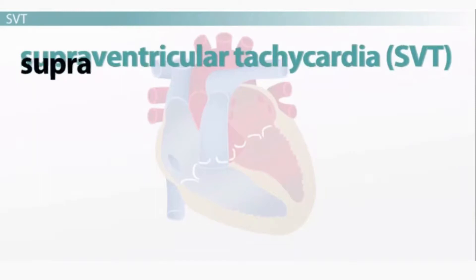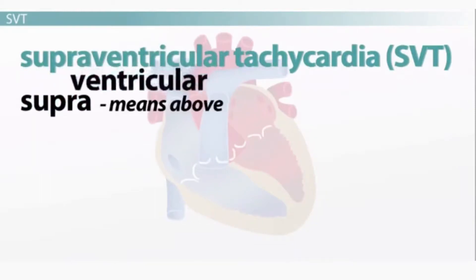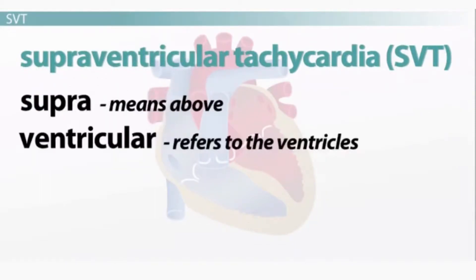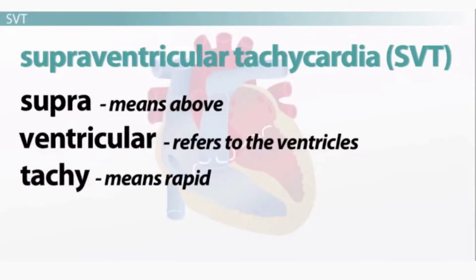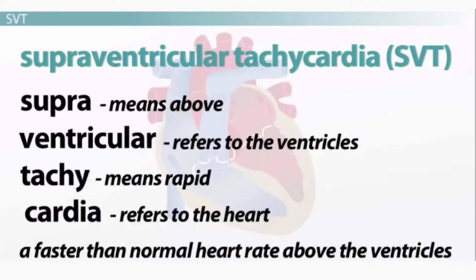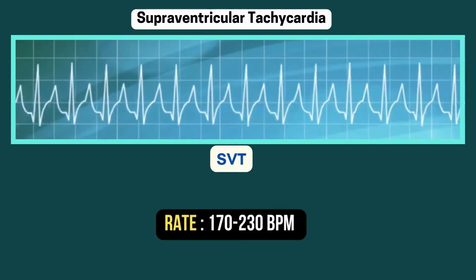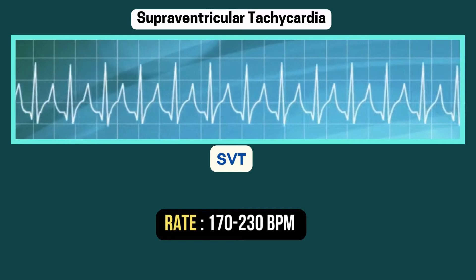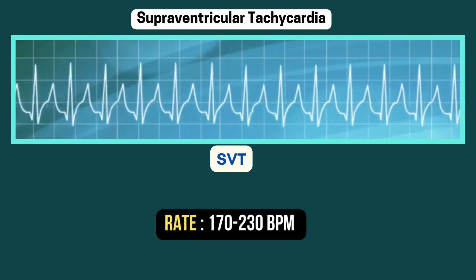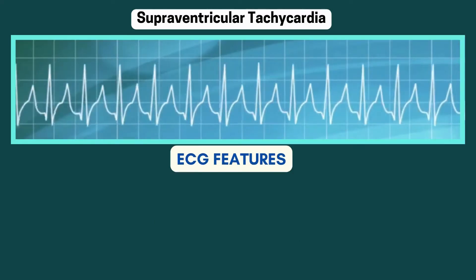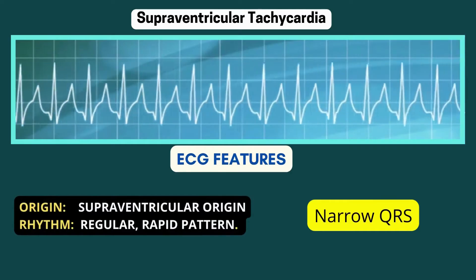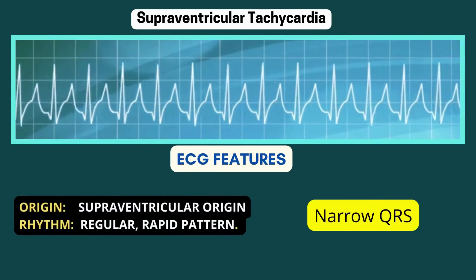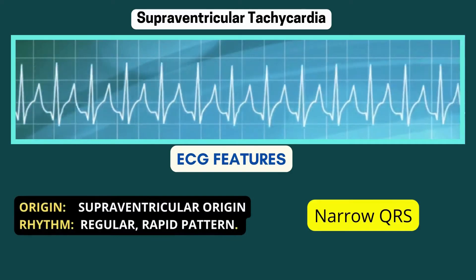Supraventricular tachycardia. Supra means above, ventricular refers to ventricles, tachy means rapid and cardia refers to heart. Together, SVT means a rapid heart rate above the ventricles. Supraventricular tachycardia is an ominous rhythm with rates often between 170 to 230 per minute. The telltale sign of SVT is the narrow QRS, which defines its supraventricular origin and its regular, rapid pattern.